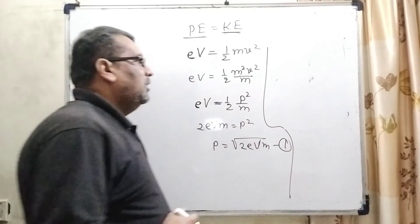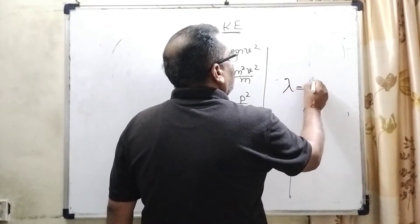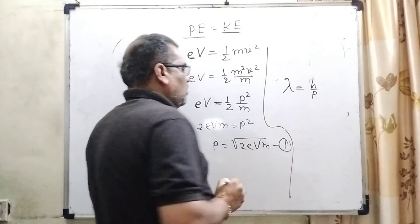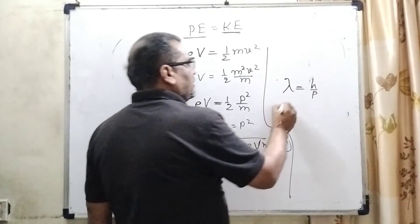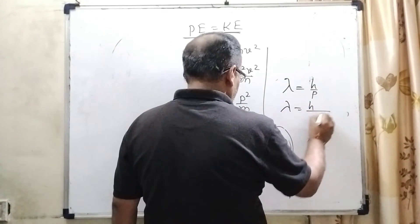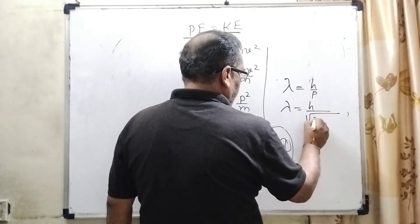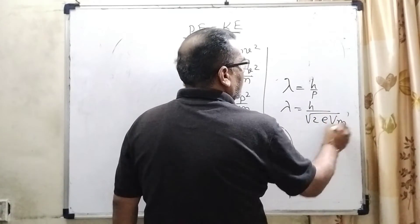Now, from de Broglie's wave equation, λ = h/p. Substituting the value of p from equation 1, λ = h/√(2eVm).